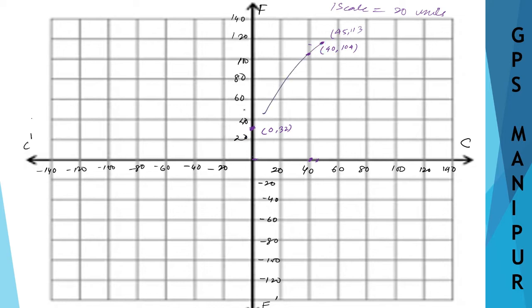Next point: C = 45, F = 113. C = 45 is between 40 and 60, and F = 113 is just above 104, so marking that point. Now join all these points. The line should be straight — use a scale and draw properly. This is the graph of F = 9/5·C + 32.